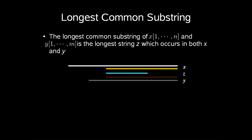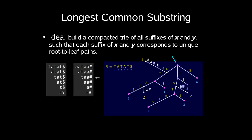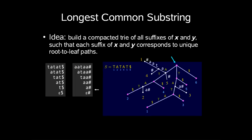Now we'll take a look at what's called the longest common substring. The longest common substring of x and y is the longest string z which occurs in both x and y. How does this rely on suffix trees as we just described? So, the idea is to build a compacted tree of all suffixes of x and y, such that each suffix of x and y corresponds to unique root-to-leaf paths. So this is an example where we just expand our suffix tree to implement all the suffixes of y.